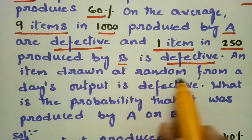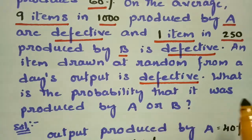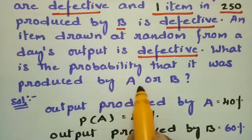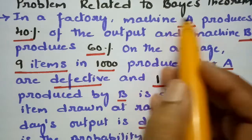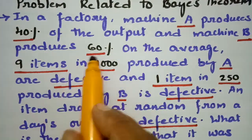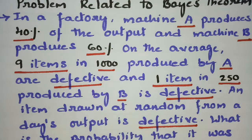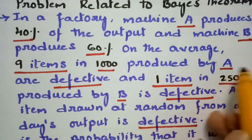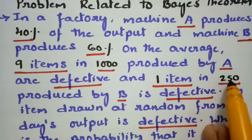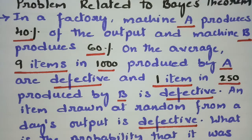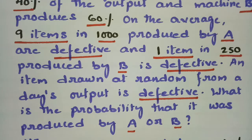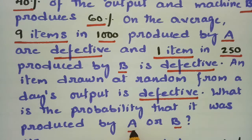An item drawn at random from the day's output is defective. What is the probability that it is produced by A or B? So the item is already defective, and we need to find what is the probability that it is from machine A or machine B.